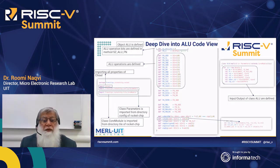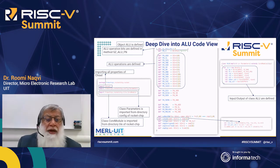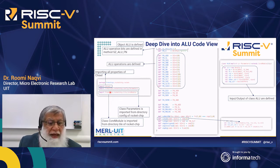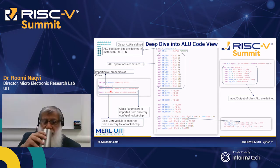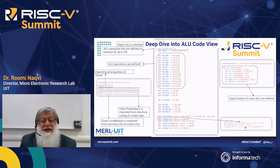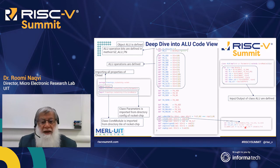We also did a deep dive into the ALU code. It defines the ALU object and then the different functions implemented: adder, subtractor, XOR, shift, OR, AND, and other operations. The code defines packages being imported, the class definition, and how a particular ALU operation is performed in terms of the software. This deep dive gives a full overview of the code structure of the ALU, and this level of detail is documented in the MASS document.